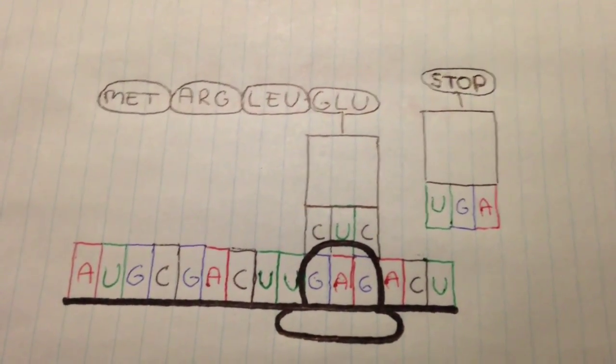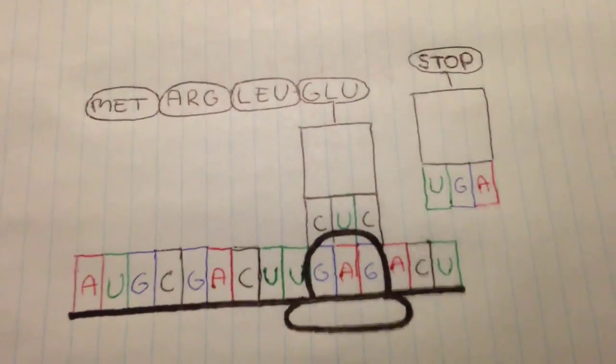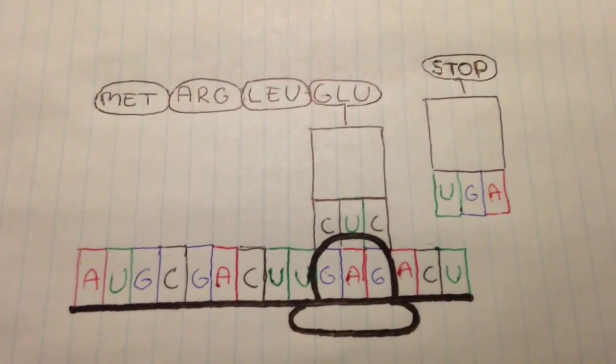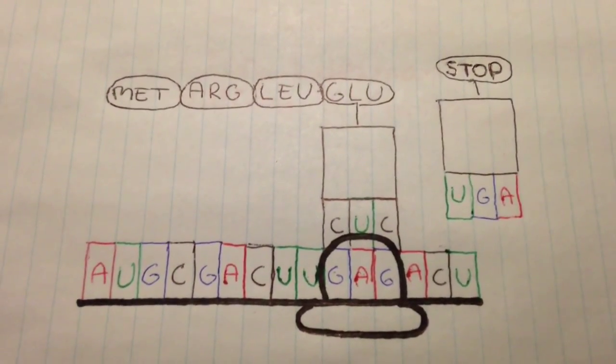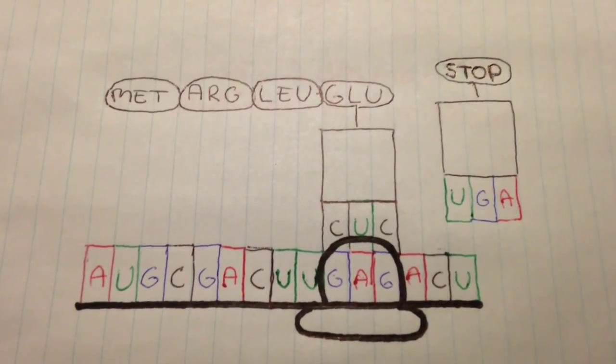As mentioned before, ribosomes keep reading until they come to a codon that says stop. Also as the ribosome is reading, only two anticodons can stay on the mRNA at a time.